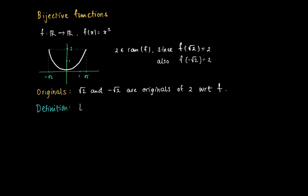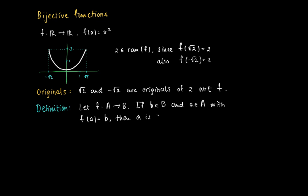A formal definition: suppose we have a function defined on the set A and its range is contained in B. If we take a small b in capital B and find an element a in capital A such that f(a) = b, then a is called an original of b with respect to f. There can be more than one original — for example, √2 and −√2 are both originals of 2 with respect to f.